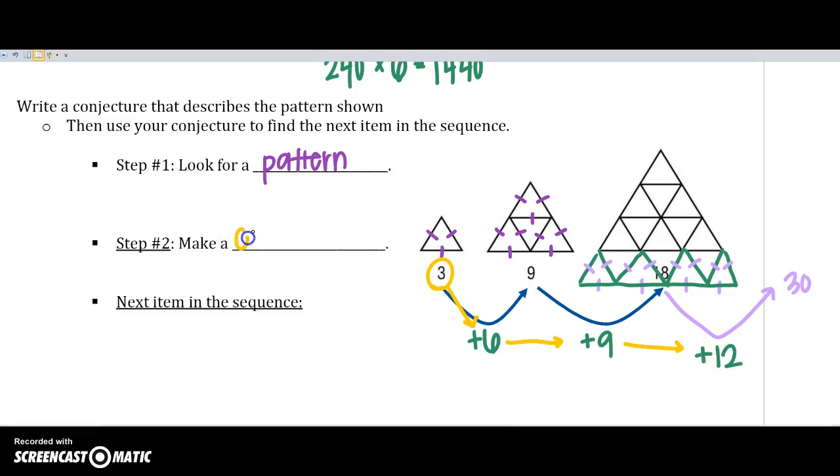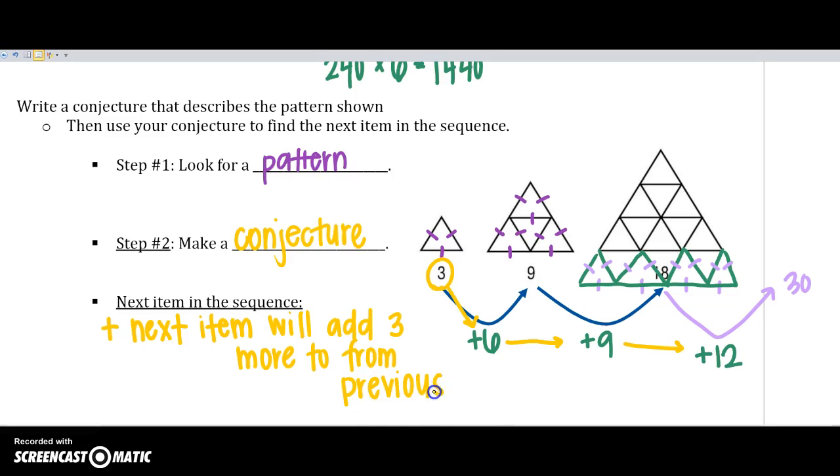Okay, so maybe my conjecture or my statement can be I'm multiplying or I'm adding the next item will add 3 more to from the previous addition. And there's no right way, I would say, to make your conjecture. Just kind of describe what pattern you're seeing. So the next item would be 18 plus 12, which would give you my next item in the sequence to be 30.